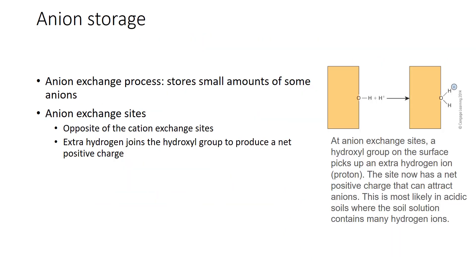Several nutrients are available to plants as negatively charged ions, or anions. The negative charge means that an anion is repelled from a cation exchange site. While these elements, like sulfur, are to a large degree stored as organic forms in humus, an anion exchange process stores small amounts of some anions. At anion exchange sites, a hydroxyl group on the surface picks up an extra hydrogen ion. The site now has a net positive charge that can attract anions. This is most likely in acidic soils where the soil solution contains many hydrogen ions.